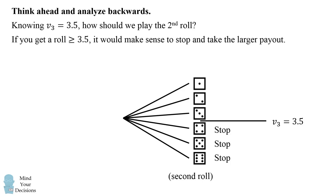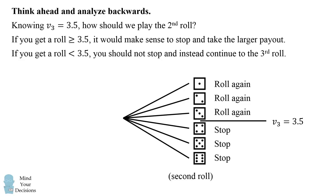On the other hand, if we roll less than 3.5, we should not stop and accept this lower value. We should instead continue to the third roll where we get an average of 3.5. So if we get 1, 2, or 3, it would make sense to roll again. Because rather than getting the smaller value, we would get an average of 3.5 on the third roll.